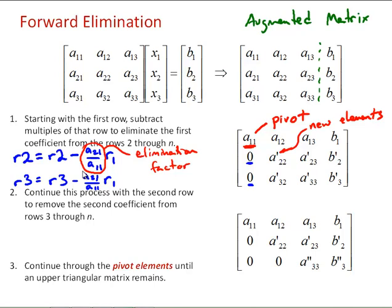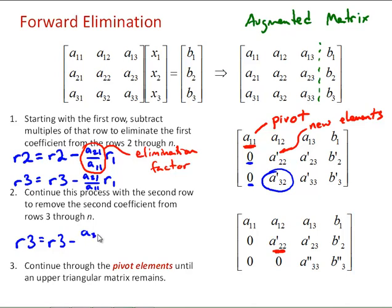Then we continue the process with the second row to remove the second coefficient from rows 3 through N. In our 3-by-3 example, we move the pivot to position (2,2) in the matrix and eliminate the second element in row 3 by writing: row 3 equals row 3 minus (A32' / A22') times row 2. We continue down until we get an upper triangular matrix. For an N-by-N system, we continue through the pivot elements down the diagonal until the upper triangular form remains.